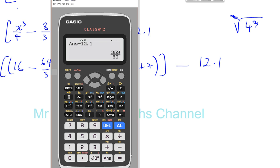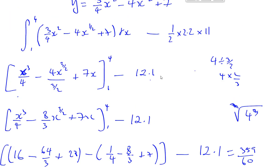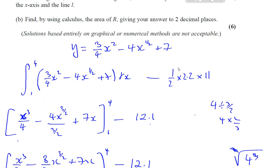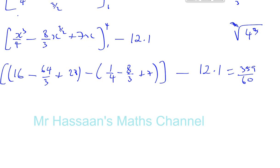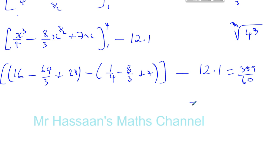Which gives us an answer, which is 359 over 60. That's 359 over 60. And the question, I think, told us to give an answer to two decimal places. Yes, it did. So, we just press the ST button. It gives you 5.983. So, you like 5.98 as your final answer.